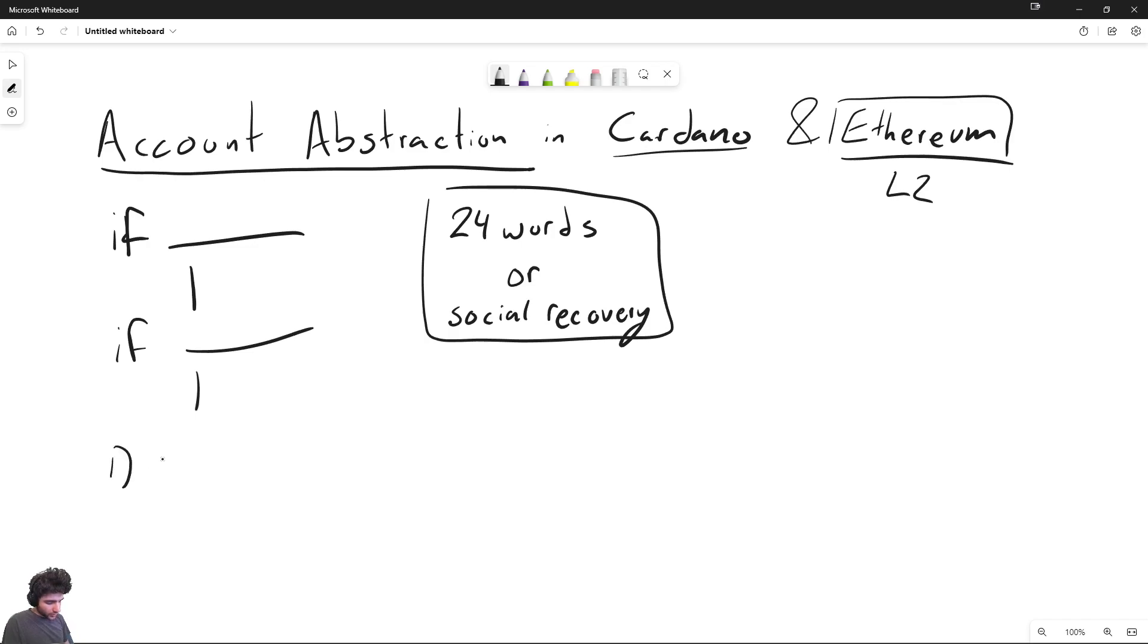There's three things in Cardano, there's verification keys. So verification keys are just like the regular keys you have from your wallet from like 24 word recovery phrases. So this is what you're most used to. There's two, which is Plutus scripts, which is what a lot of dApps in Cardano use. And then three, there's something called native scripts.